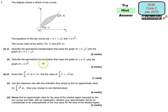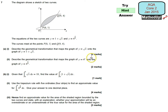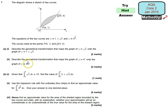Part A also says describe the geometrical transformation that maps the graph of y equals 4 to the power of x onto the graph of y equals 4 to the power of x over 9. So x here has been replaced by x divided by 9. Think about what transformation happens in this kind of scenario.